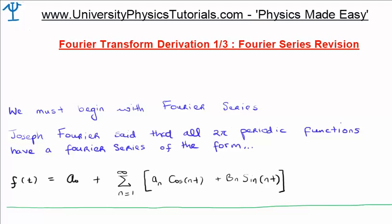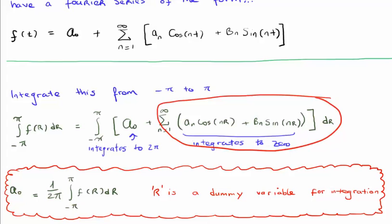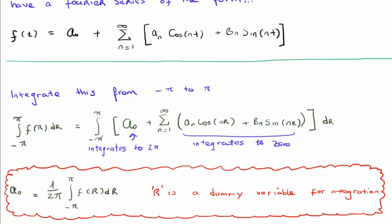Let's quickly show how Fourier derived the functional forms of a_0, a_n, and b_n. In order to derive the a_0 term, we multiply the Fourier series by one and integrate from minus pi to pi. The set of sine and cosine terms integrates to zero, and the constant term integrates to twice pi. Rearranging, we get the functional form of a_0. Note that if we had defined the Fourier series with a_0 over two, the scaling term would be slightly different, but it would not affect your results.